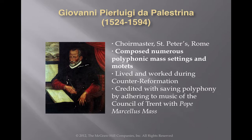Another prominent composer was Giovanni Pierluigi da Palestrina, who composed numerous polyphonic settings for the mass and also composed many motets. What makes Giovanni very important is that during the Renaissance, a group called the Council of Trent was trying hard to limit the amount of polyphony used in music, especially sacred music. It was Giovanni Pierluigi's compositions — especially the Pope Marcellus Mass — that helped warm the Council of Trent up to the idea of polyphony being used in the church.